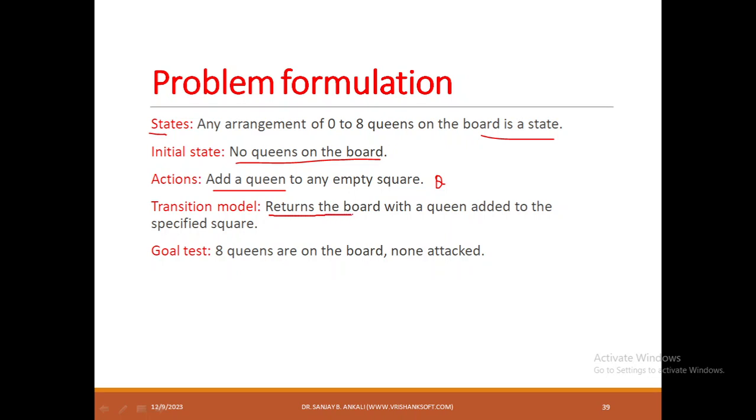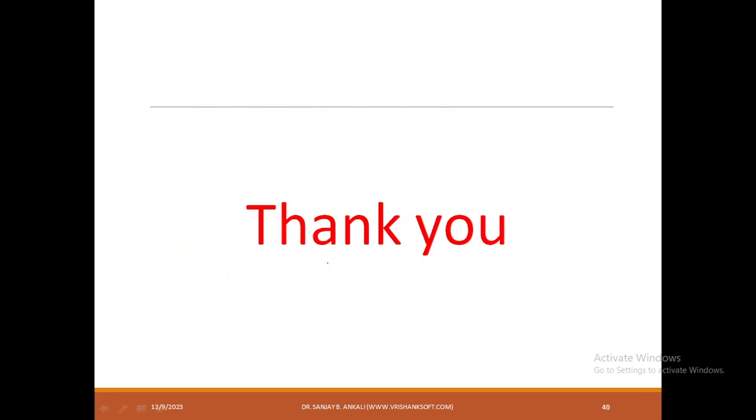The transition model is once you place a queen, you have to return the board with a queen added to the specified square. So once you add a queen, you will get a new state, and that state you have to print. What is the goal state? Eight queens have to be placed on the board in such a way that they will not attack row-wise, column-wise, or diagonally. This is the formulation of the 8-Queen problem. Thank you.